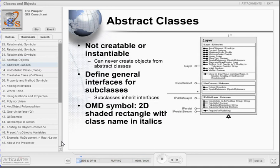We'll now turn our attention to the various class types that you will encounter. The first class we'll discuss are abstract classes. In your ArcObjects OMDs, these classes are represented by a 2D shaded rectangle with the class name in italics. These classes are not creatable or instantiable. They exist only to define general interfaces for subclasses that will inherit from these abstract classes. So you can never create objects from this most basic type of class.